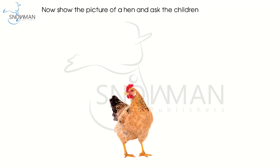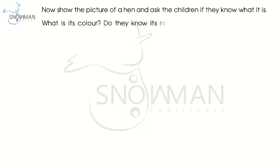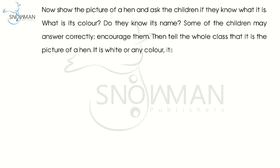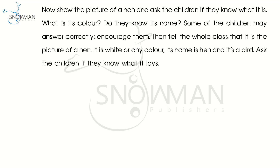Now show the picture of a hen and ask the children if they know what it is. What is its color? Do they know its name? Some of the children may answer correctly. Encourage them. Then tell the whole class that it is the picture of a hen. It is white or any color. Its name is hen and it's a bird. Ask the children if they know what it lays. You may get mixed responses. Tell them that it lays eggs.